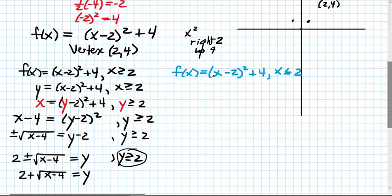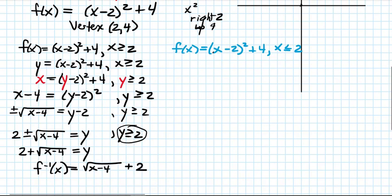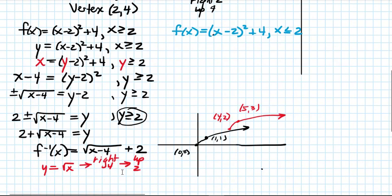So the inverse is f inverse of x equals the square root of x minus 4 plus 2. Using transformations, the square root of x looks like a half-parabola going up and to the right. So the square root of x minus 4 plus 2 is shifted to the right 4 and up 2, and it looks like this red graph.